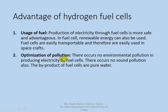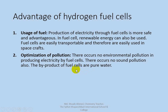Regarding pollution: other fossil fuels produce carbon dioxide and greenhouse gases, but in a fuel cell, pure water is produced. There is no sound pollution and no environmental pollution in producing electricity by fuel cell. The by-product of fossil fuels — CO₂, NOx, and SO₂ gases — are environmental pollutants, but in a hydrogen fuel cell the only by-product is pure water, which can even be consumed as drinking water.